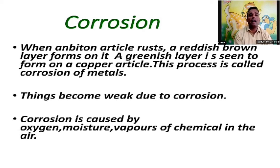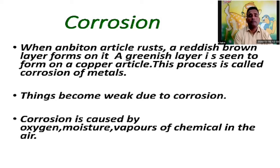Corrosion means the greenish layer you can see on metal. Things become weak due to corrosion. When substances or metals are stored for a long time, you can see a thick layer of brown or greenish color. It may damage or weaken the substances because of corrosion. Corrosion is caused by oxygen, moisture, vapor, or chemicals in the air — these are the things that always cause corrosion.